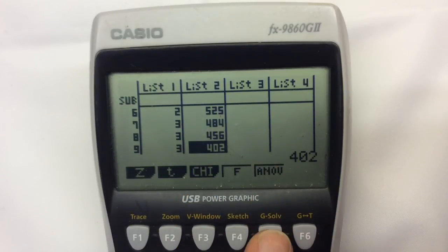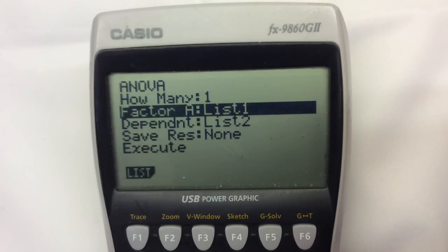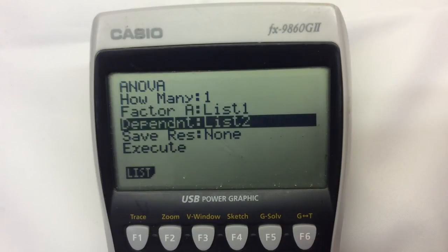And it's an ANOVA test, of course. We need to make sure it knows what it's doing. How many refers to whether it's a one-way or a two-way table. We are specifying which factor we are looking at, so which group we're looking at. That data is coming from list one. Dependent - this is the actual data that you've got.